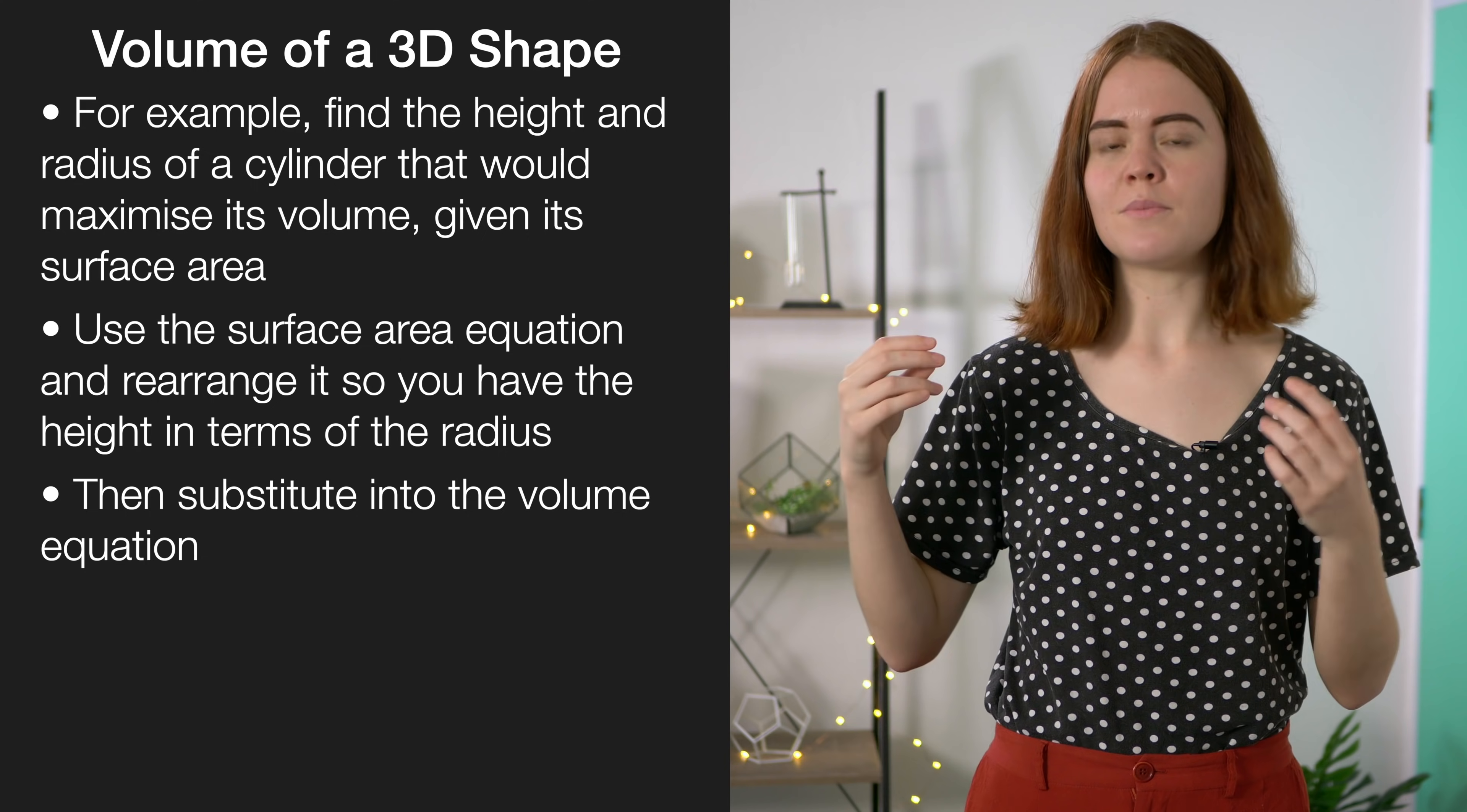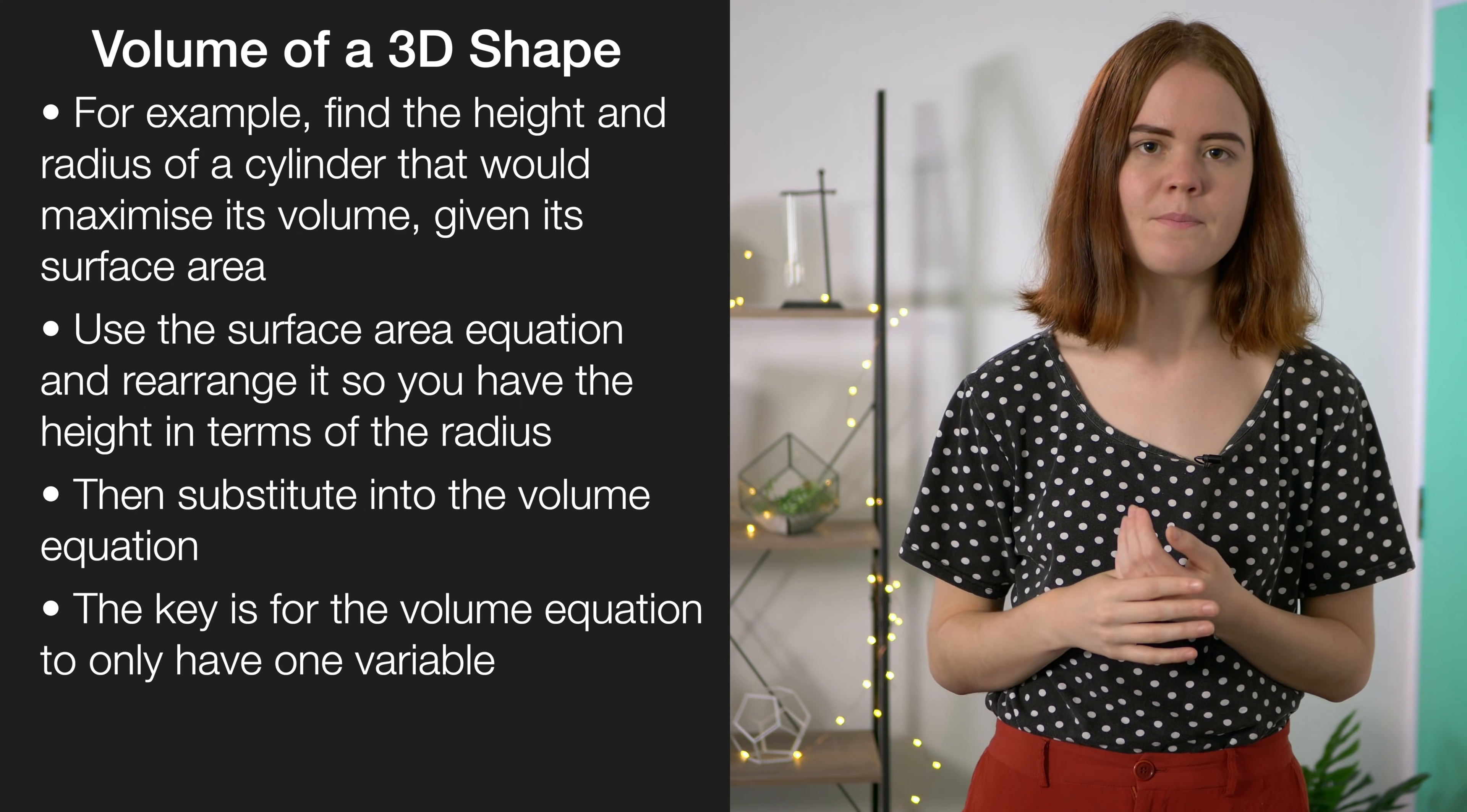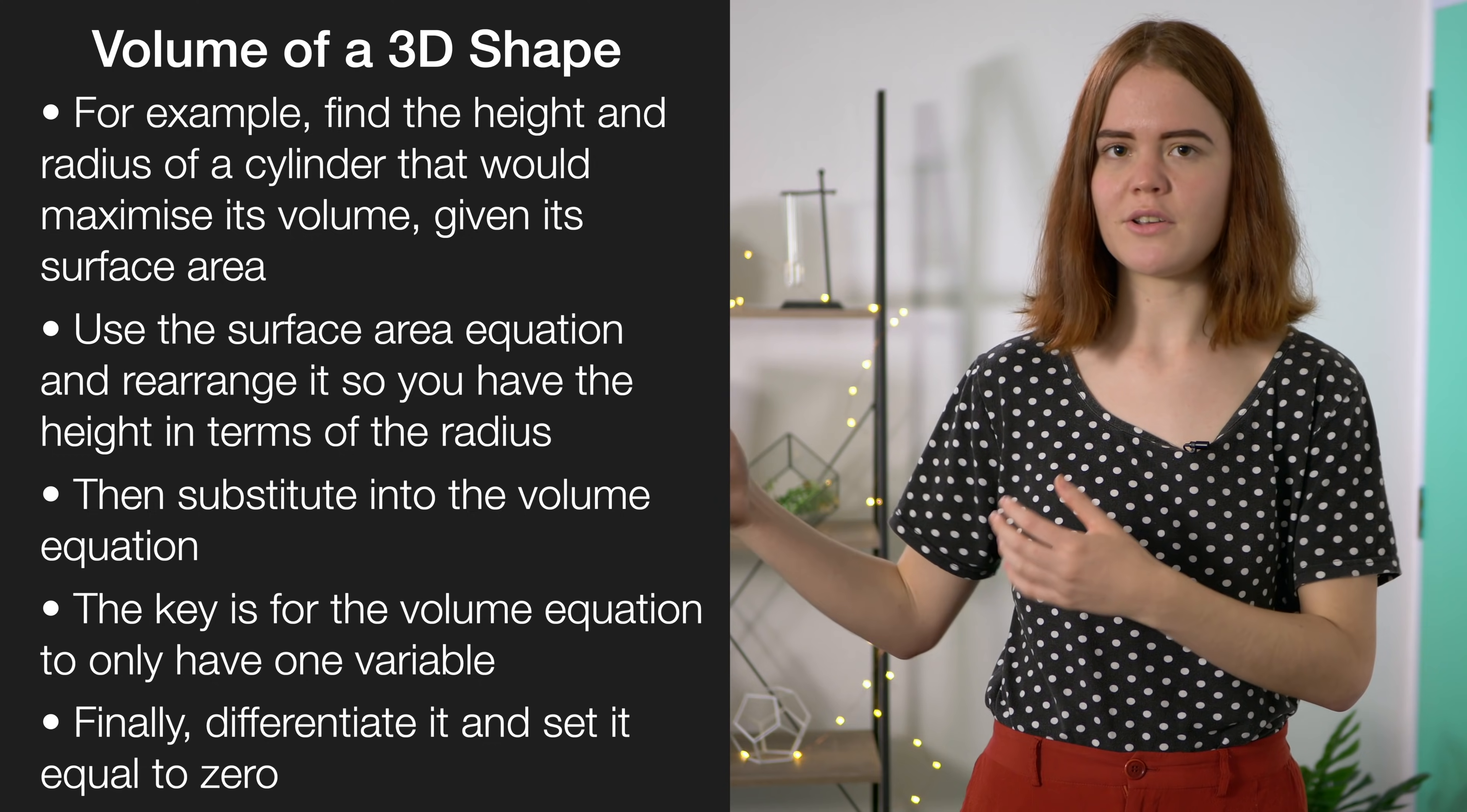The idea is to make sure that your volume equation only has one variable in it, the radius, so that you can easily differentiate it. Now differentiate it and set it equal to zero so you can solve to find the radius that would give the maximum volume.